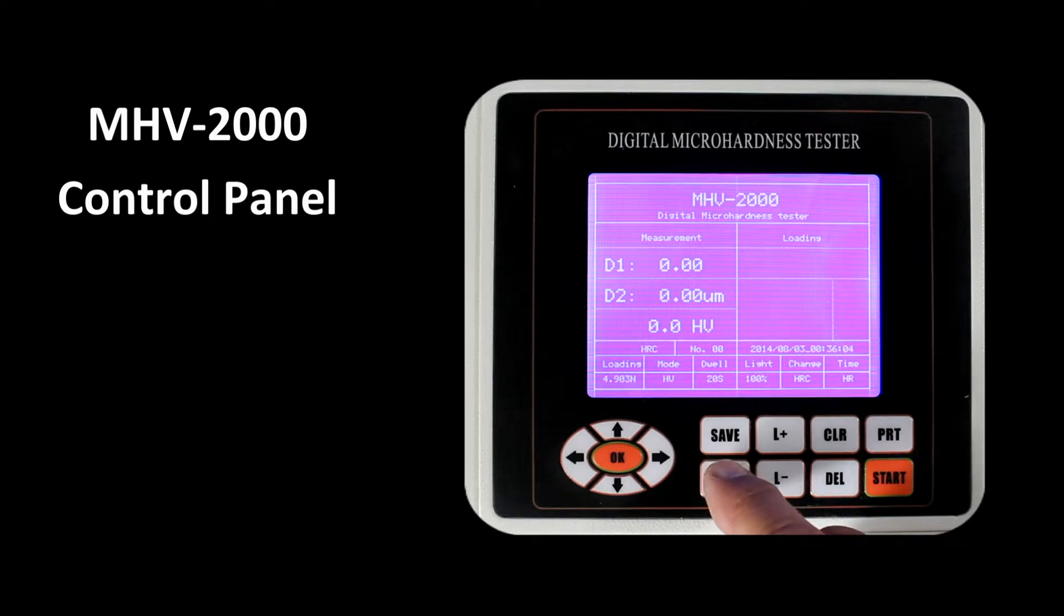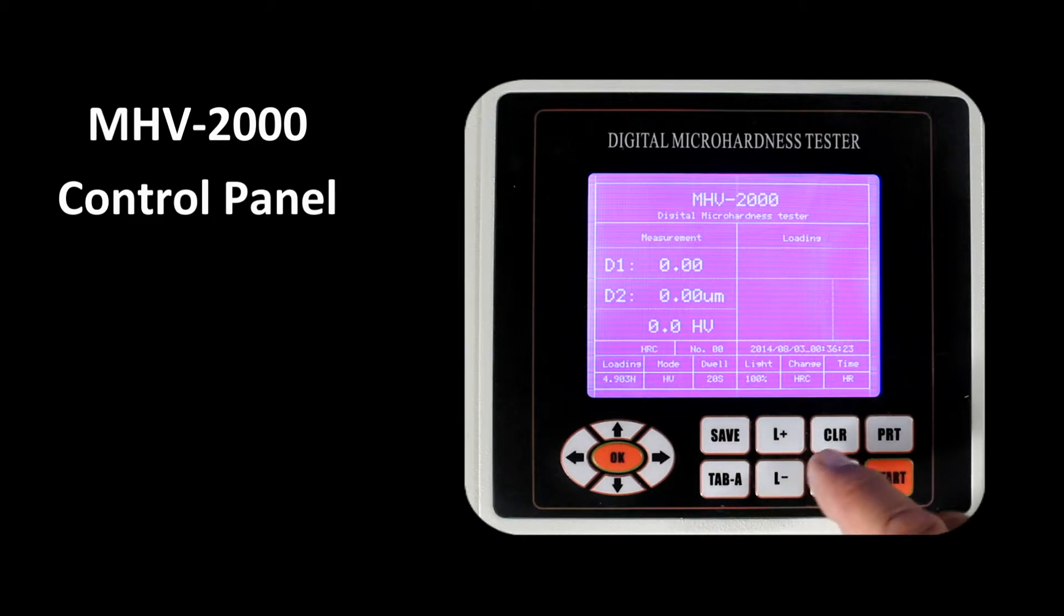A couple of the other parameters on the screen here include the save. So after we've completed a measurement, if it was a good measurement, we can go ahead and press the save button. If for some reason at a later time that we need to take a look at that data, we can pull it up with the tab A. L minus and L plus would be the light intensity going to the filer. CLR is actually clear, so after we calibrate our filer to zero, we would hit clear to set that to zero.